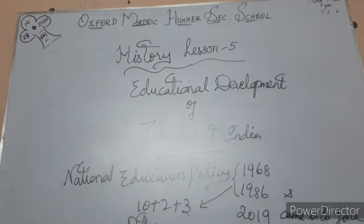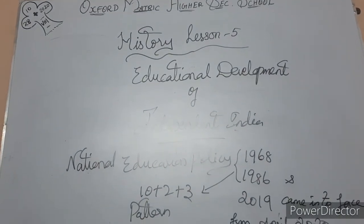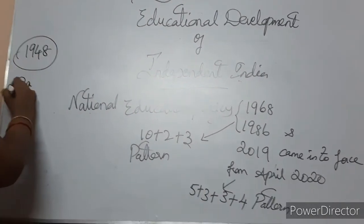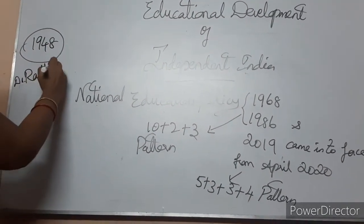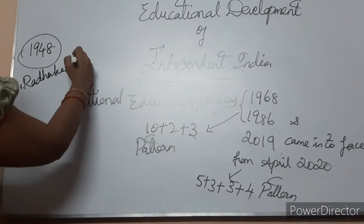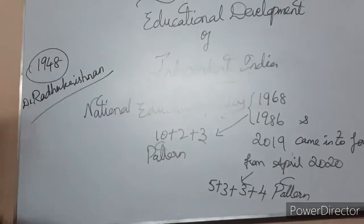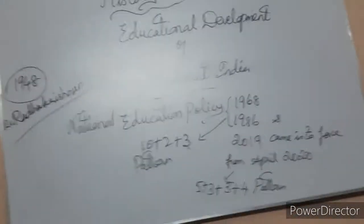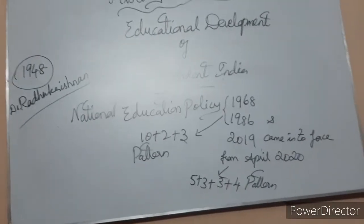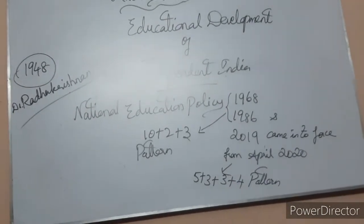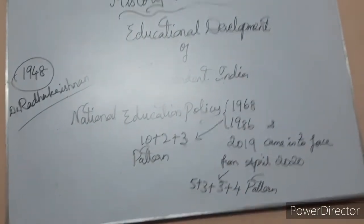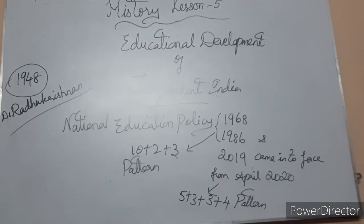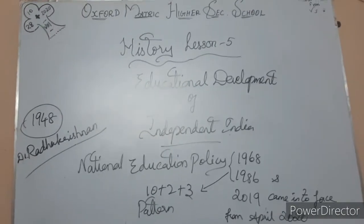In 1948, the Radhakrishnan Commission was appointed. Dr. Radhakrishnan — whose birthday we celebrate as Teacher's Day — the Radhakrishnan Commission was appointed to present a report on university education. Based on the commission's recommendations, the University Grants Commission was constructed to determine the standard of higher education.